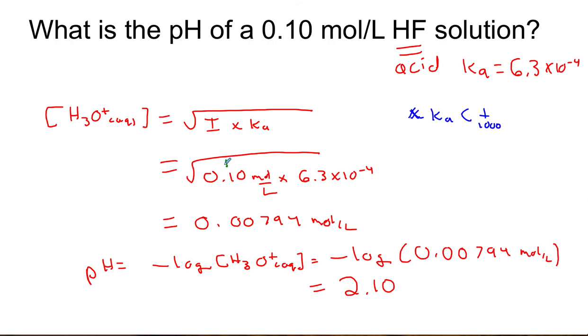Following the rule that there are a minimum of two significant figures in all the given information, you must put two decimal places in your pH.